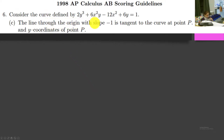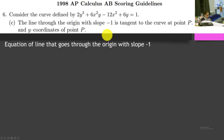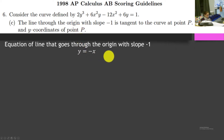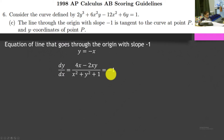The line through the origin with slope negative 1 is tangent to the curve at point P. Find the x and y coordinates of point P. If we have a line going through the origin, the y-intercept is 0, and its slope is negative 1. So we can write that equation: y equals negative x. Think of mx plus b — m is the slope, negative 1; b is the y-intercept, 0. We want to set the derivative equal to negative 1, because the tangent line has slope negative 1.